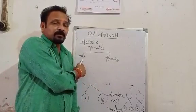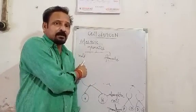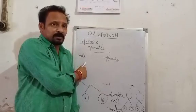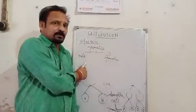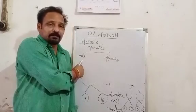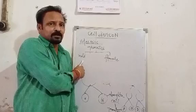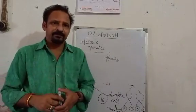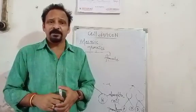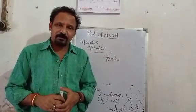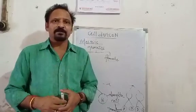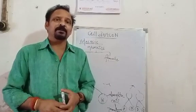Male gametes are always motile — motile means those who are able to move from one place to another. So male gametes are capable of moving from one place to another. For example, pollen grains contain male gametes.